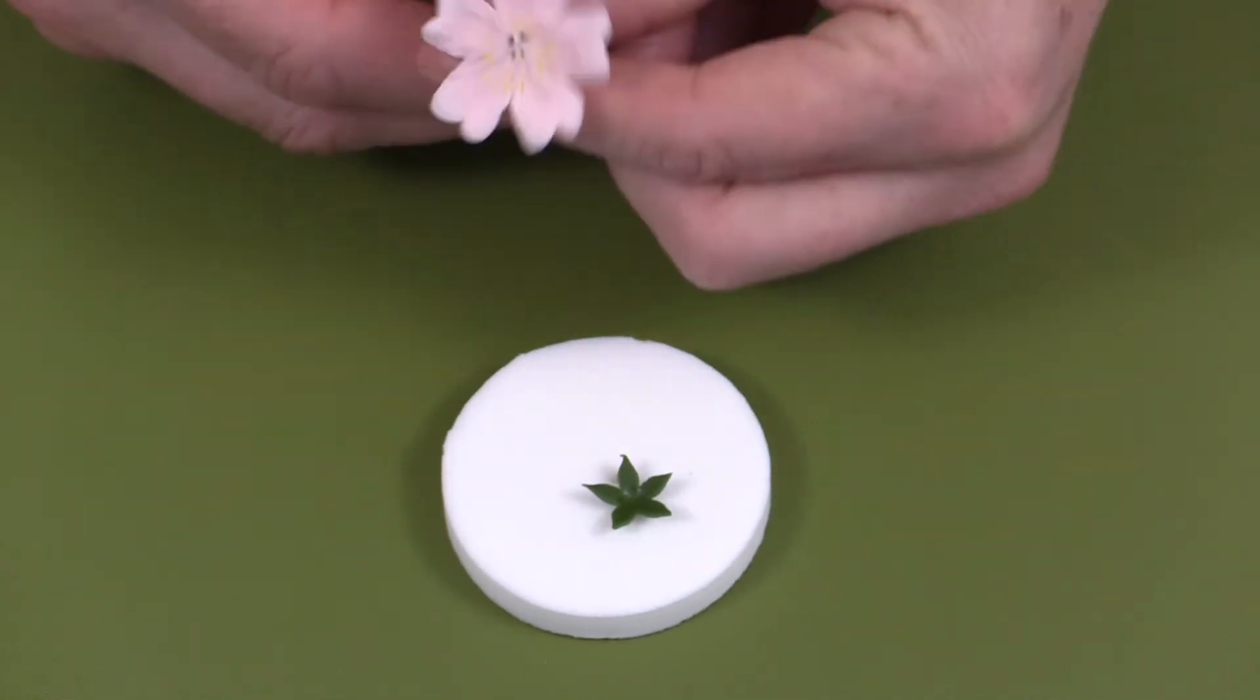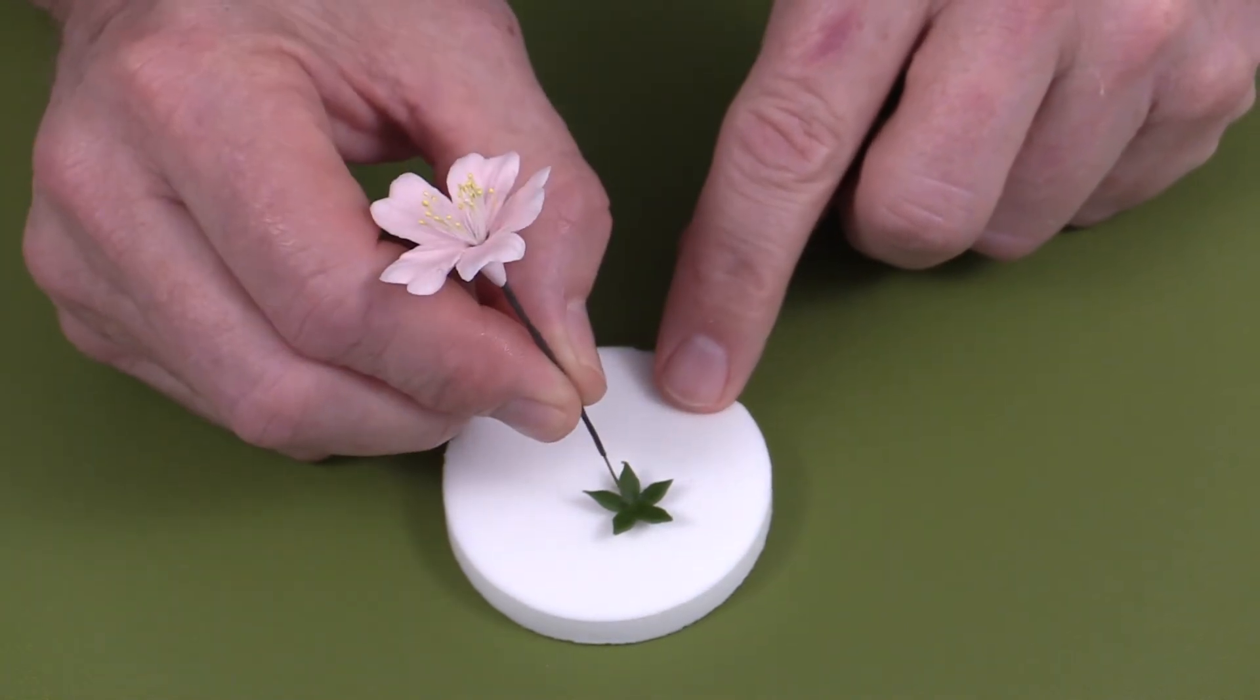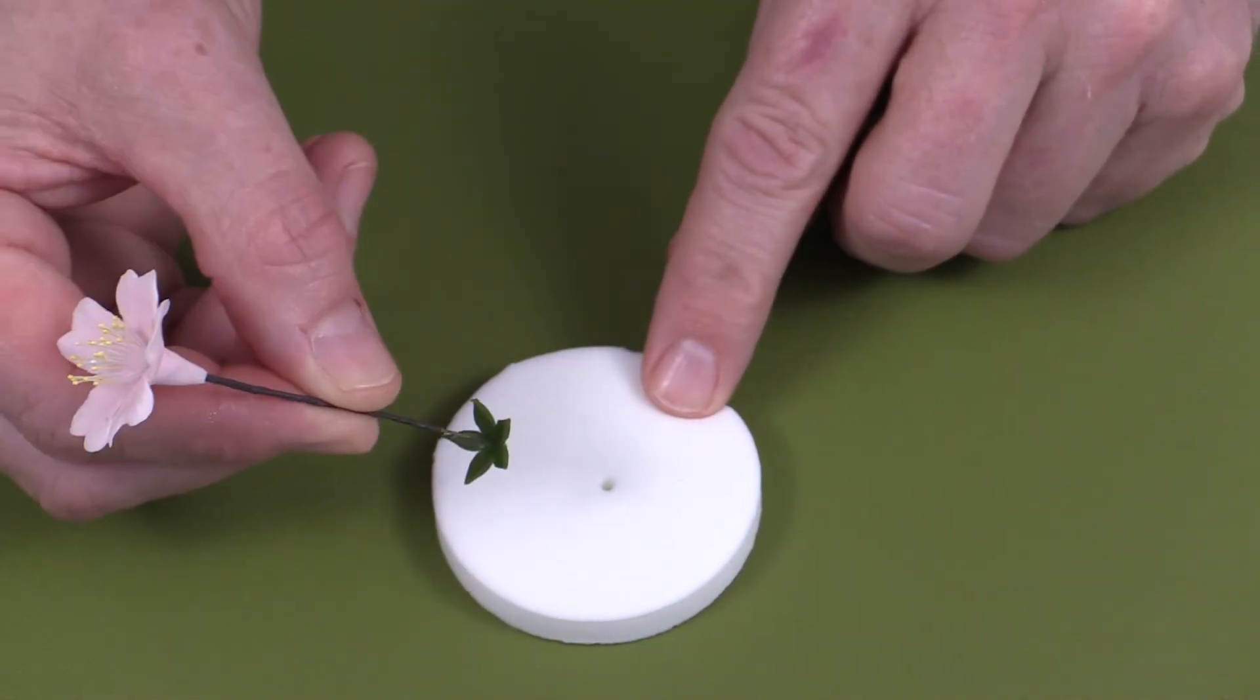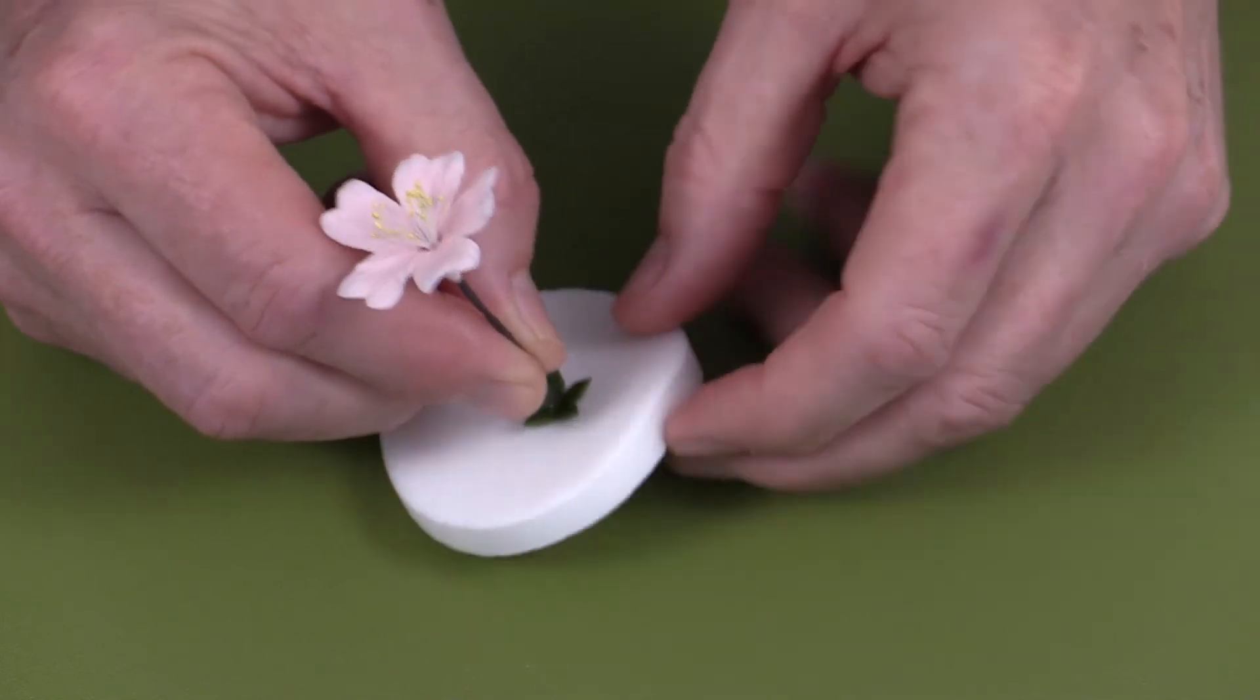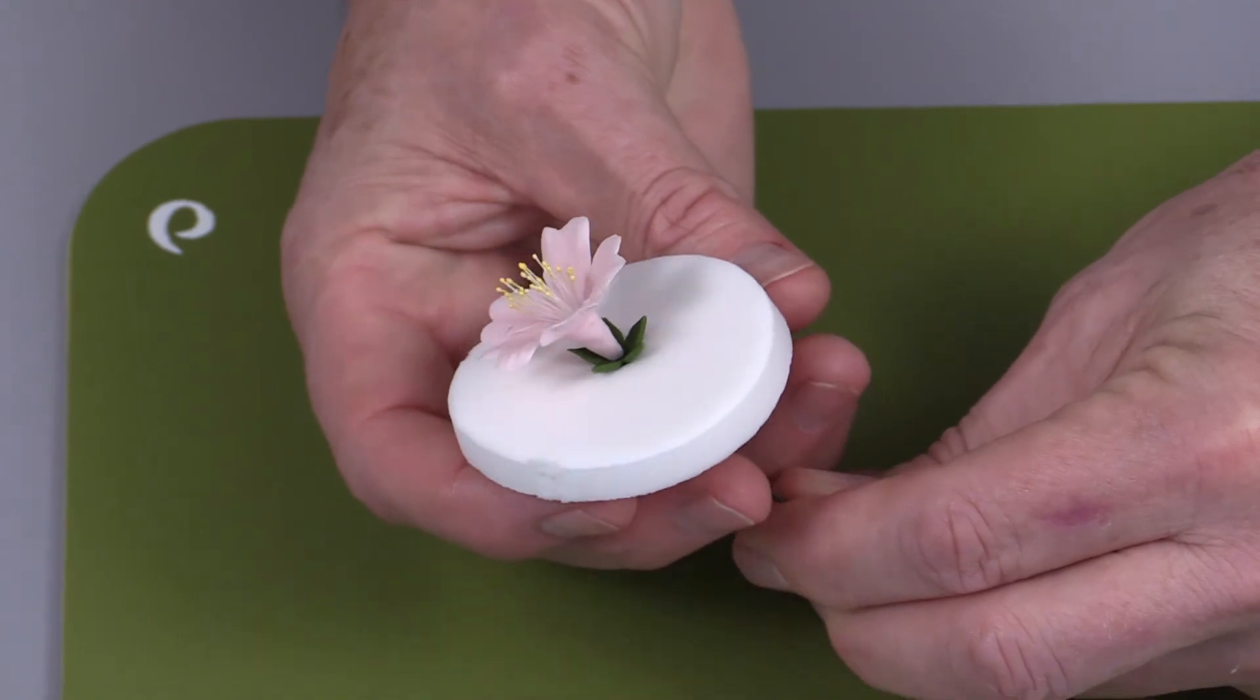Then here I have a cherry blossom. And with the cherry blossom or the Stephanotis or the sweet pea, you're just going to pierce that through and then you place this over where the small hole is. So then when you bring this up, you see how this just comes up perfectly and it just comes up to the bottom.